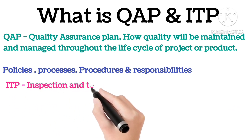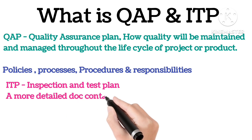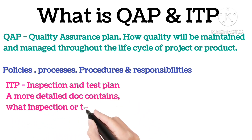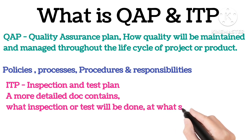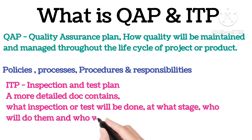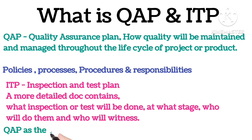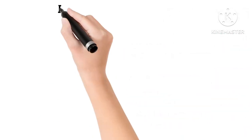ITP — Inspection and Test Plan. An ITP is more detailed. It's a structured document that defines what inspections or tests will be done, at what stage, who will do them and who will witness. It's basically the roadmap of quality control. You can think of QAP as the strategy and ITP as the execution plan.